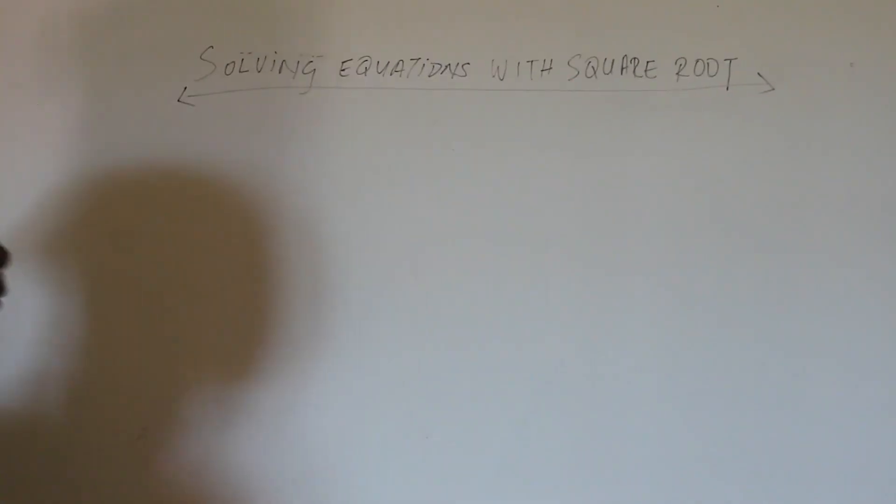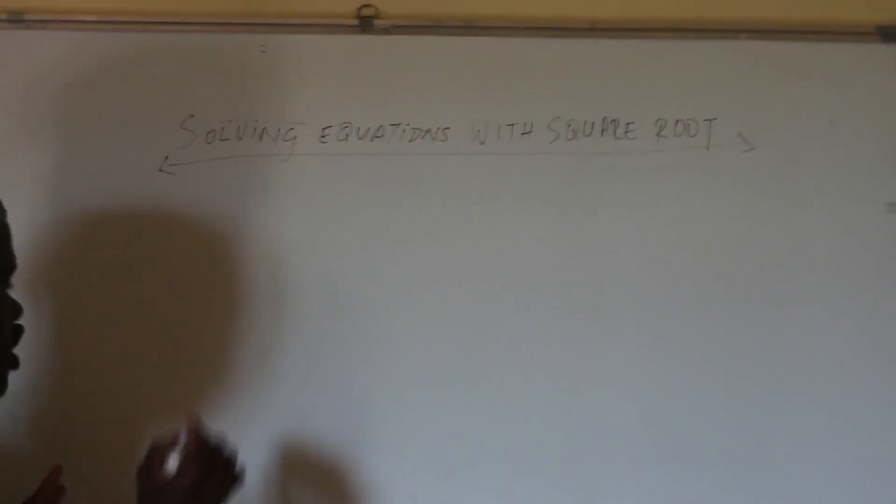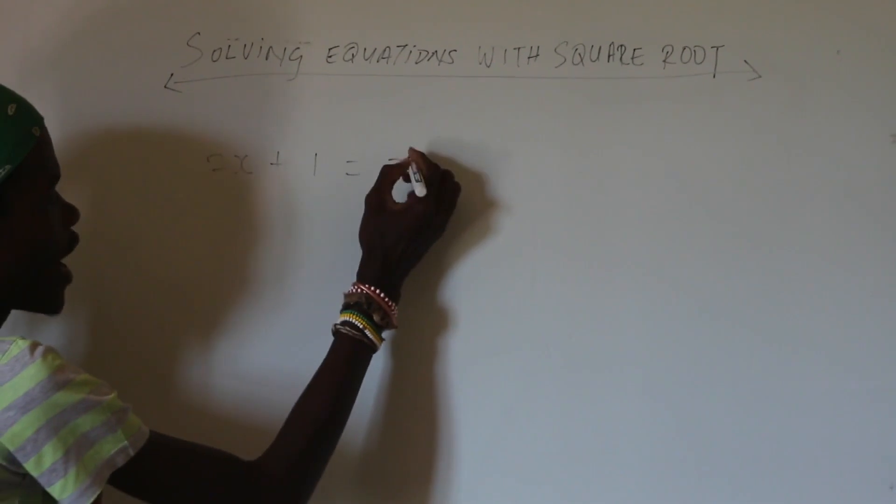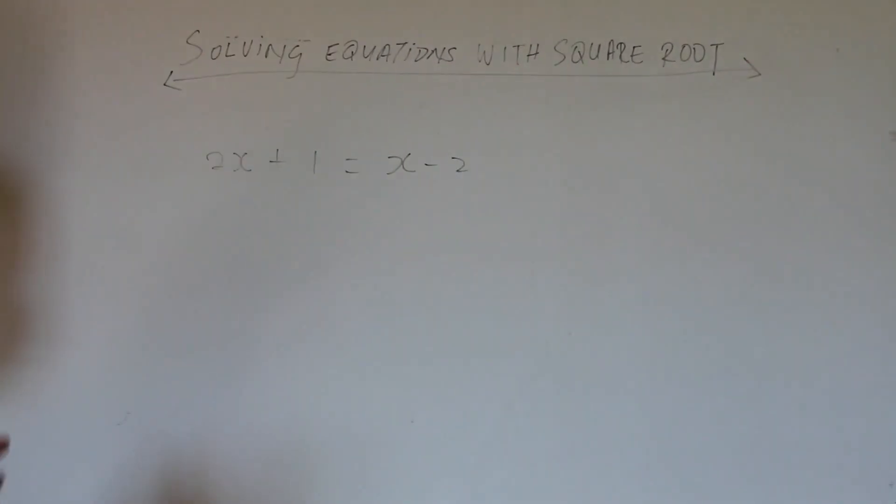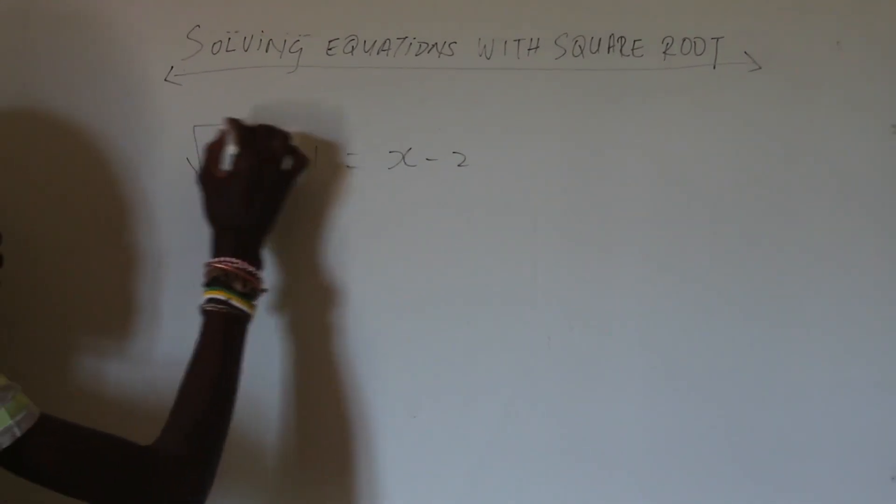So guys, today we're doing solving equations with square root. What am I talking about? It's those equations. Listen, we have something like 2x plus 1 equals x minus 2. But now the difference is it's your normal equation but this time it has a square root on one side.